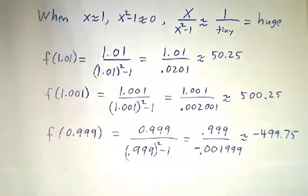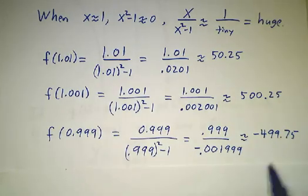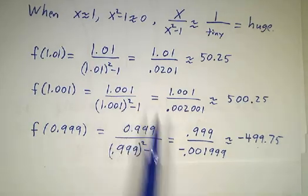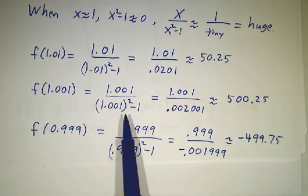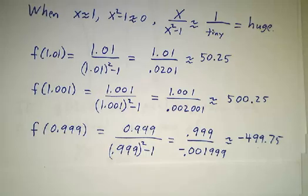If you're on the other side, you plug in 0.999, you get about minus 500. So in fact, the function blows up to infinity from the right, it blows up to minus infinity from the left.